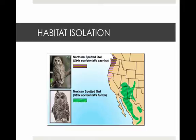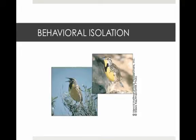One type is habitat isolation, where two species occupy different habitats, even if the two habitats are in the same location — for example, land and water. Behavioral isolation is when behavior patterns are different, even in closely related species. One species doesn't recognize the behavior of another, which is especially important in mating rituals.